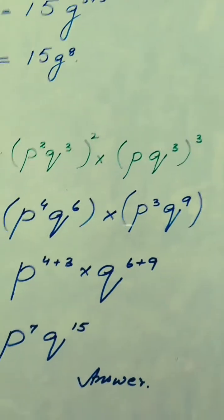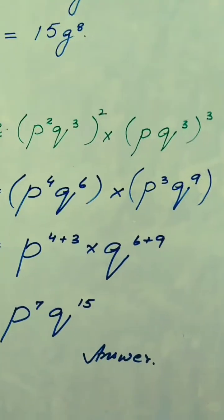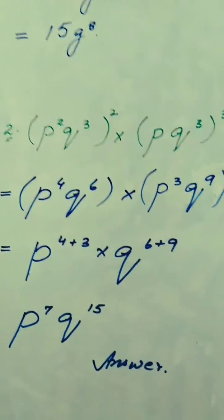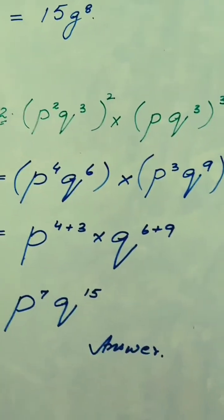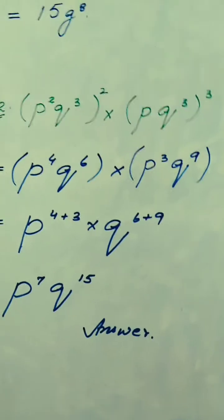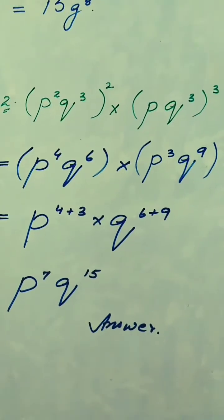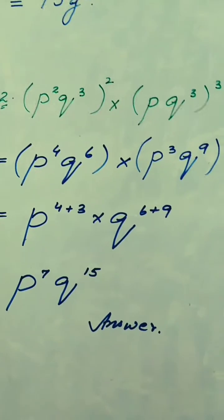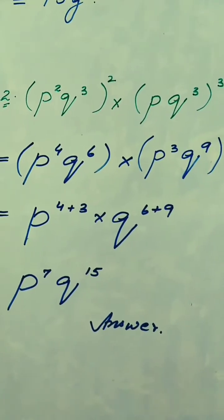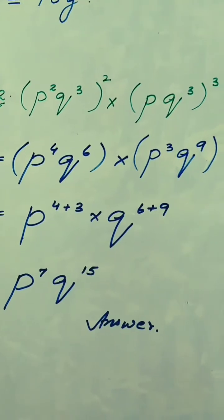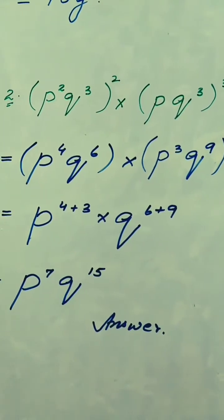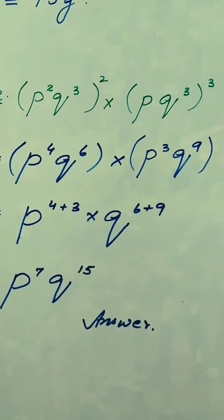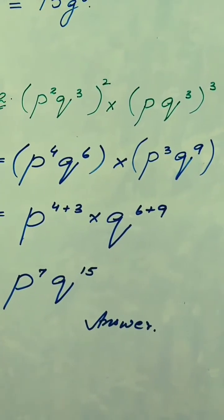The next question is p squared q cubed, whole squared, multiplied by p q cubed, whole cubed. Here we have two variables, p and q. So first we will solve the power.